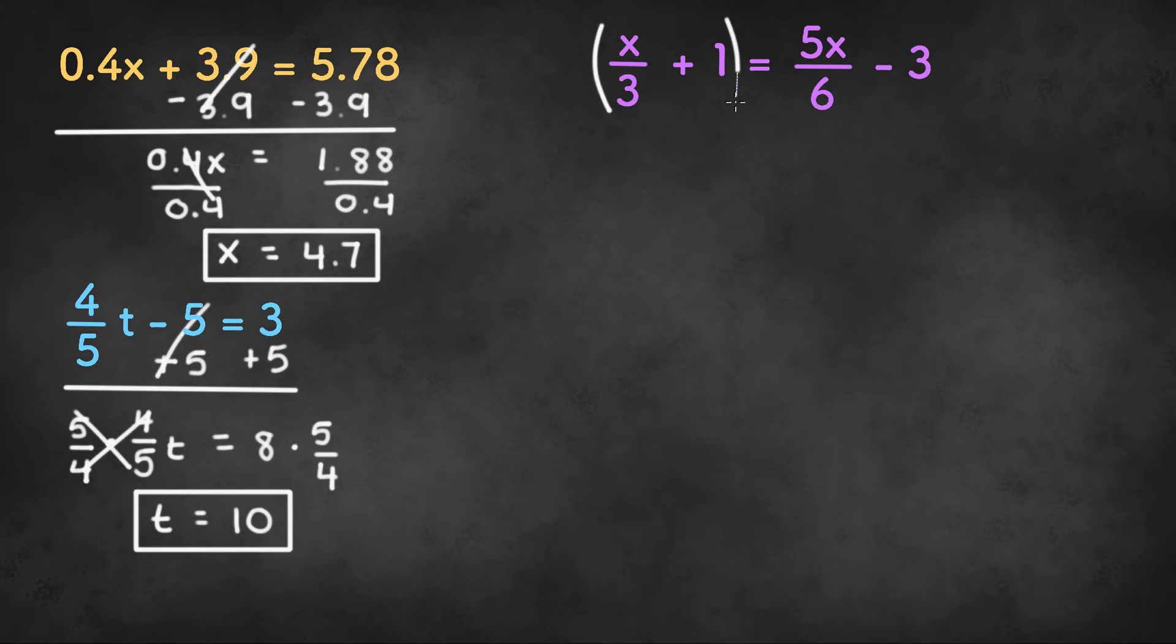We're going to multiply both sides by the least common multiple of 3 and 6, which is 6.